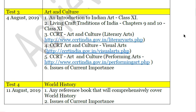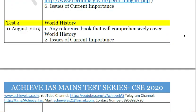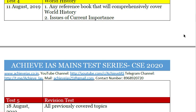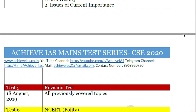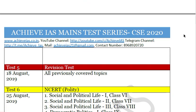Test number three is on 4 August 2019, covering Art and Culture: An Introduction to Indian Art (Class 11), Living Craft Traditions of India (Chapters 9 and 10 of Class 11), and the CCRT website covering literary arts, visual arts, and performing arts, plus issues of current importance. Test number four is World History on 11 August 2019 — you can follow any reference book that comprehensively covers world history, and questions will also be based on current issues.